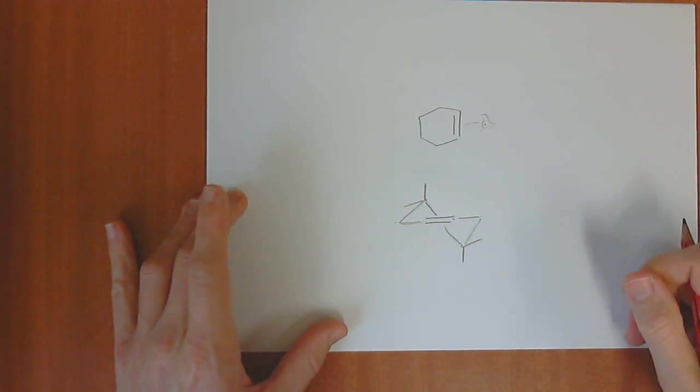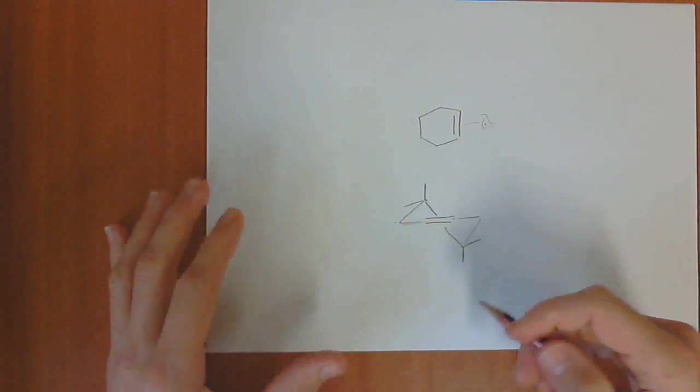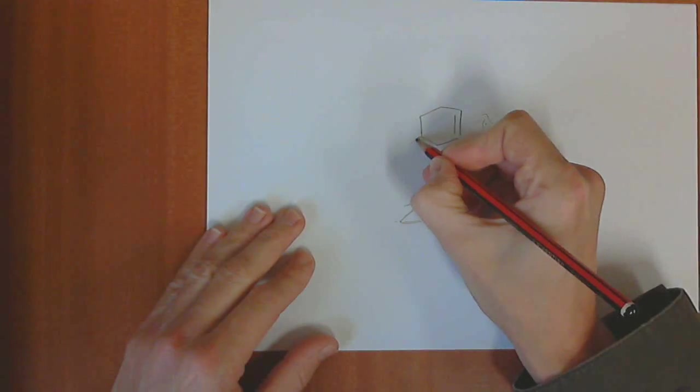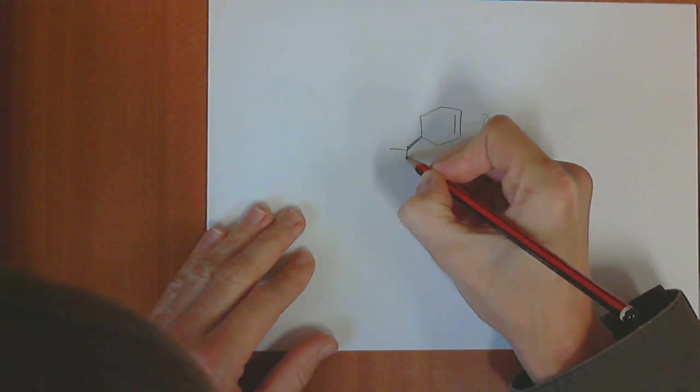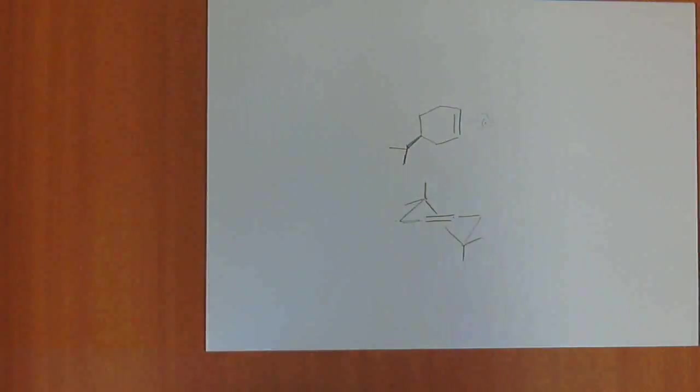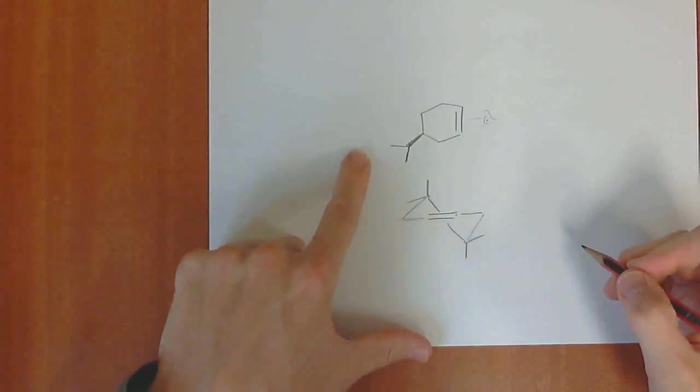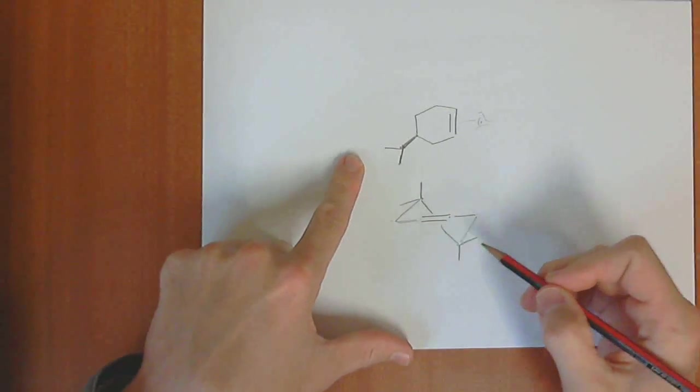For example, we have a cyclohexene. We put a substituent on. Let's put on an isopropyl group, and the isopropyl group is going up. We can assign a chirality to that, a chiral center, R or S. Now we're going to draw it as a half chair.